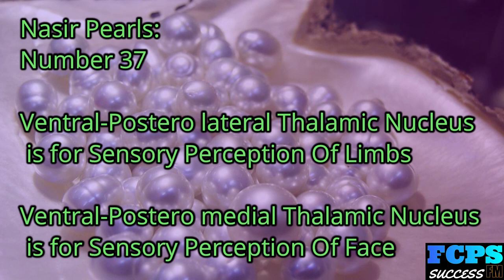Nasir Pearl number 37: The ventral posterolateral thalamic nucleus is for sensory perception of the limbs. The ventral posteromedial thalamic nucleus is for sensory perception of the face.